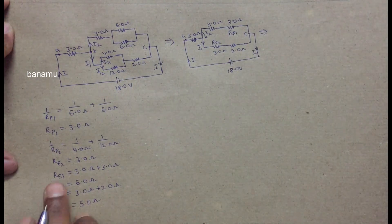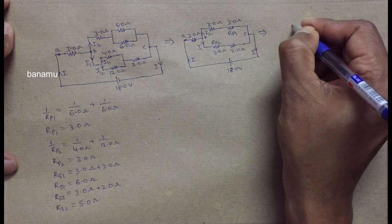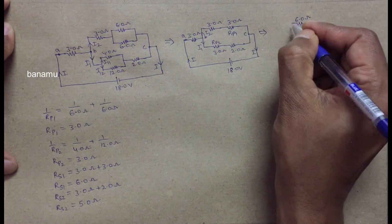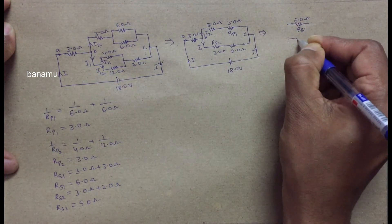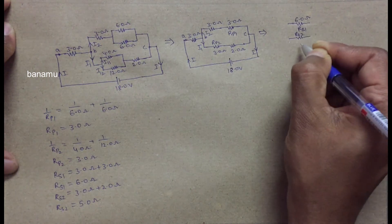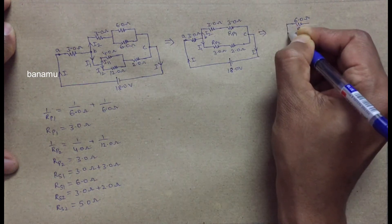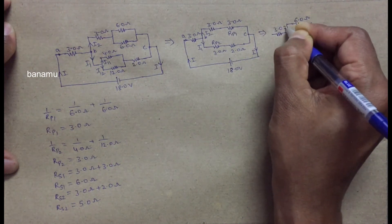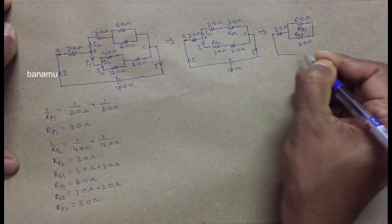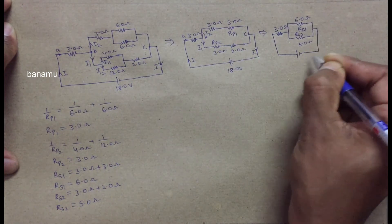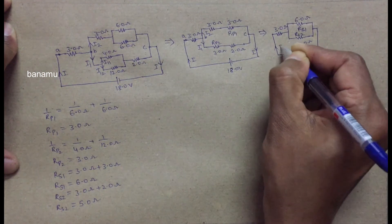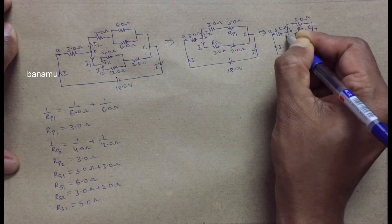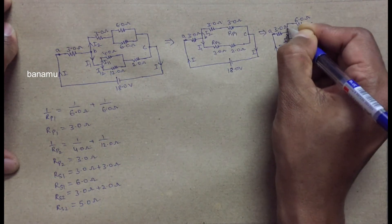Draw the further modified figure. RS1 (6 ohms) and RS2 (5 ohms) are both connected in parallel to each other. This parallel combination is connected to the 3 ohm resistance in series and then to the 18 volt battery. The total current is I, with points A, B, and C marked. The current through the lower branch is I1 and through the upper branch is I2.